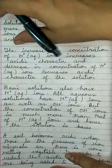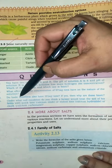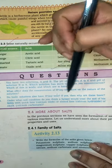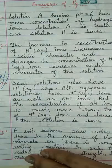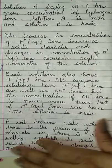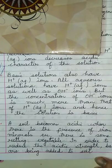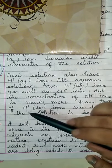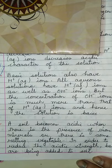Question number 3, a very important question also asked in last year's board exam: Do basic solutions also have H⁺ ions? Yes. All aqueous solutions have both H⁺ ions as well as OH⁻ ions. But in basic solutions, the concentration of OH⁻ ions is much more than that of H⁺ ions, that is why it is basic. If H⁺ concentration is more than OH⁻, it will be acidic.